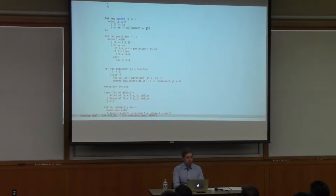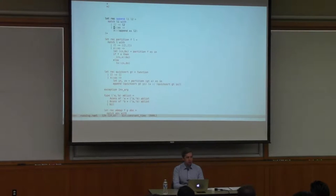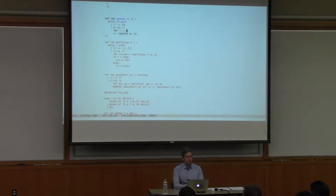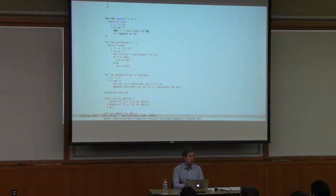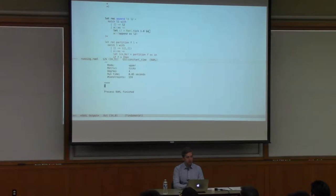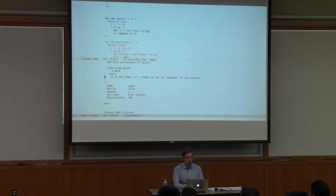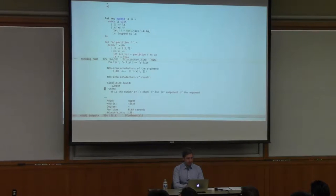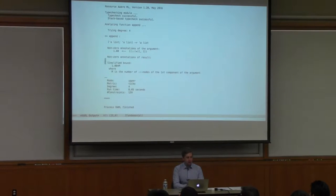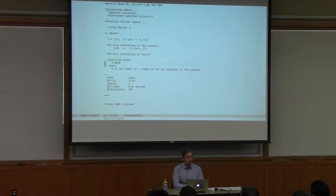You can also insert TIC commands. If you want to bound the number of cons operations—as we did in the lecture—you can analyze the code using the TIC metric. It's pretty fast: 0.05 seconds. What you get is exactly what you expect: 1 times the length of the first list. That's the result you saw in class yesterday.